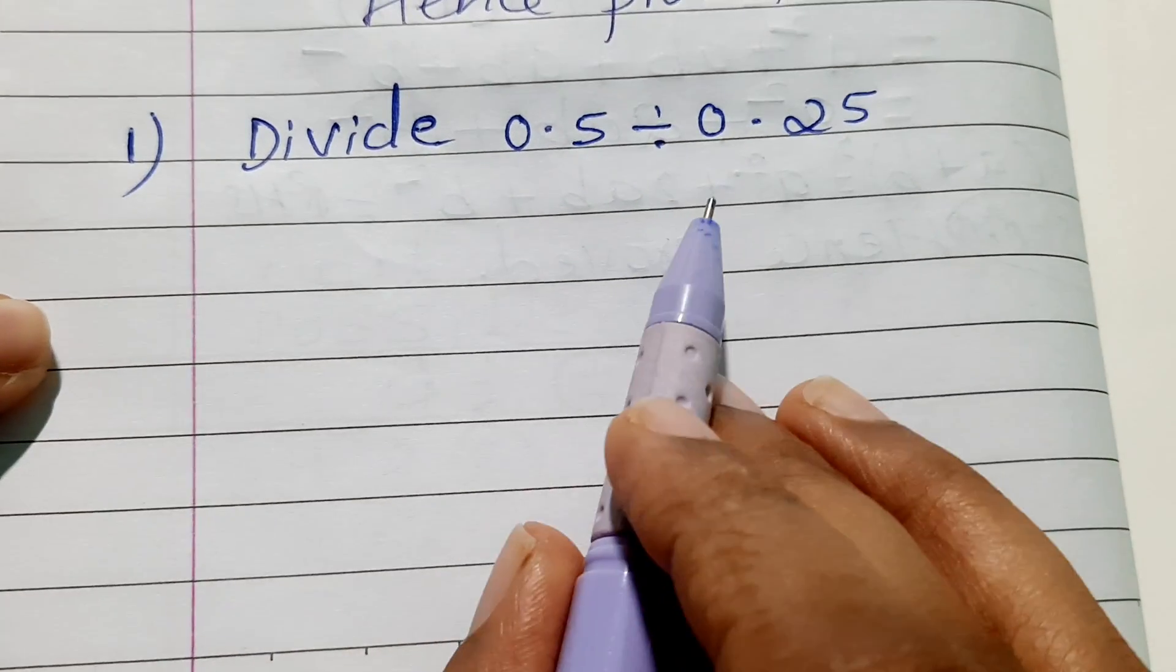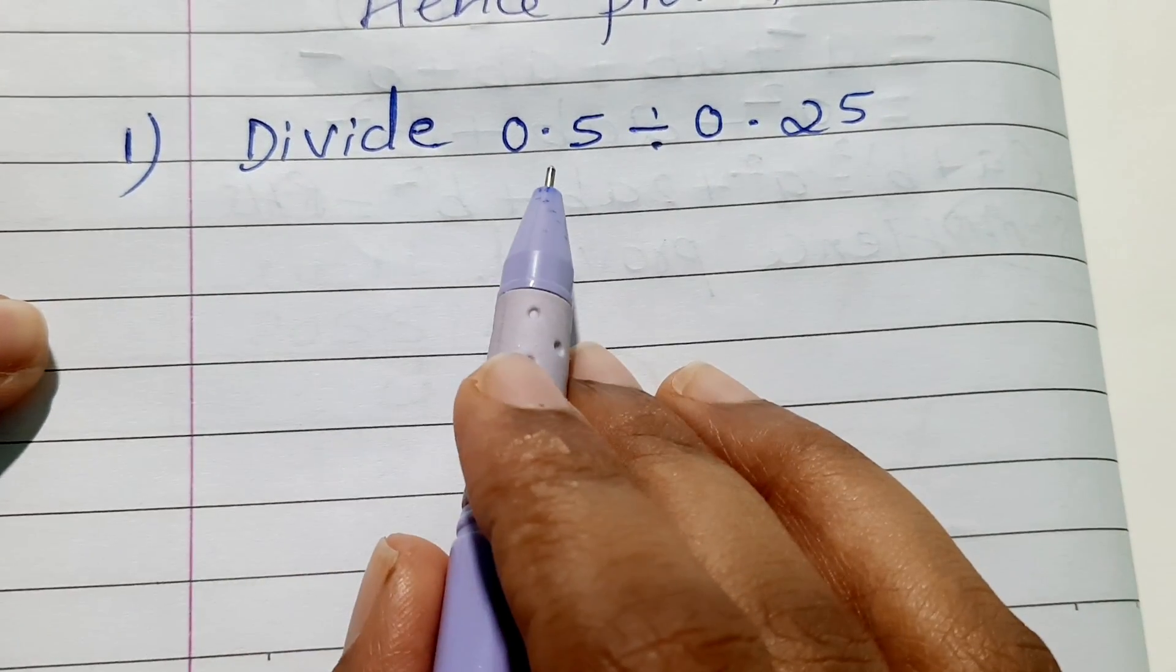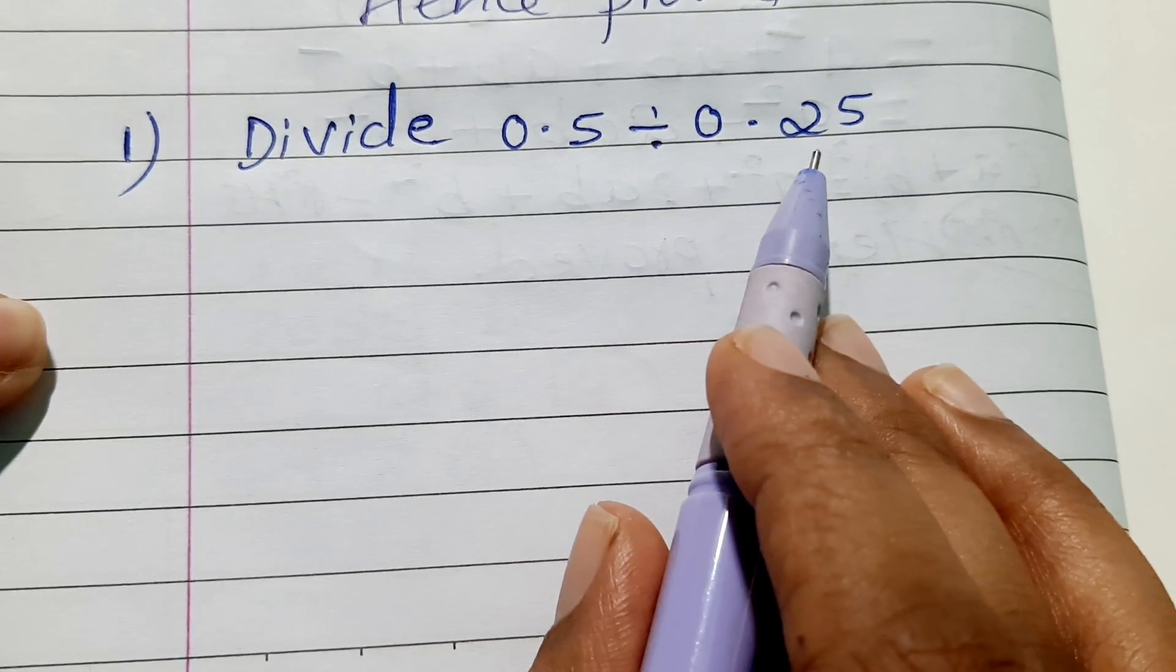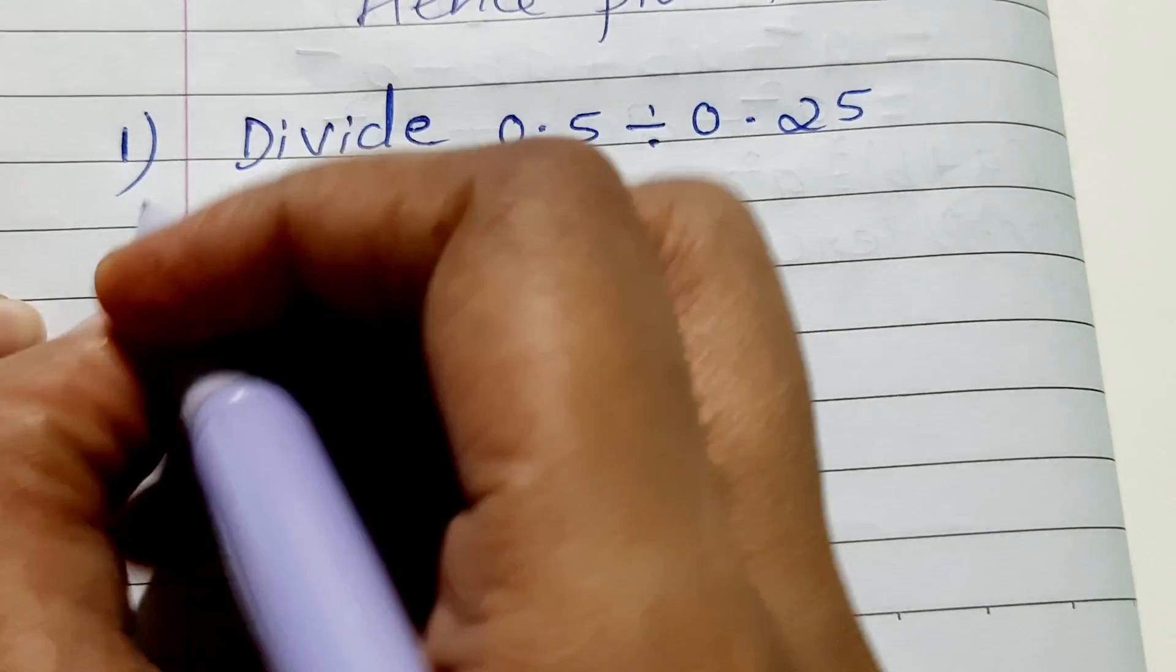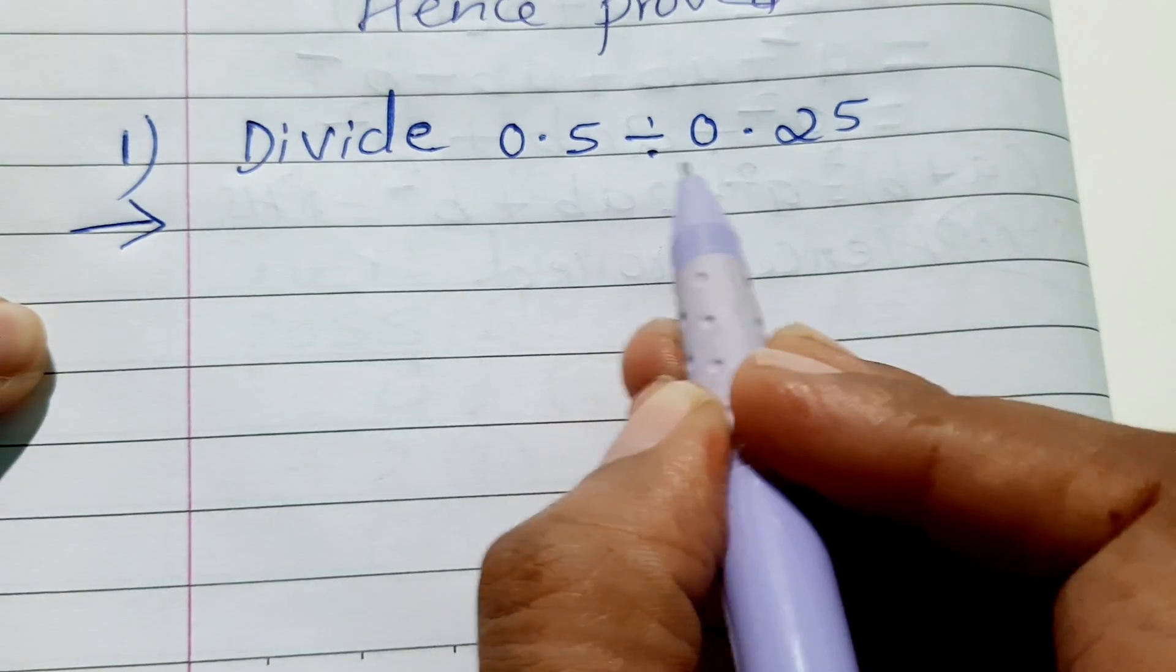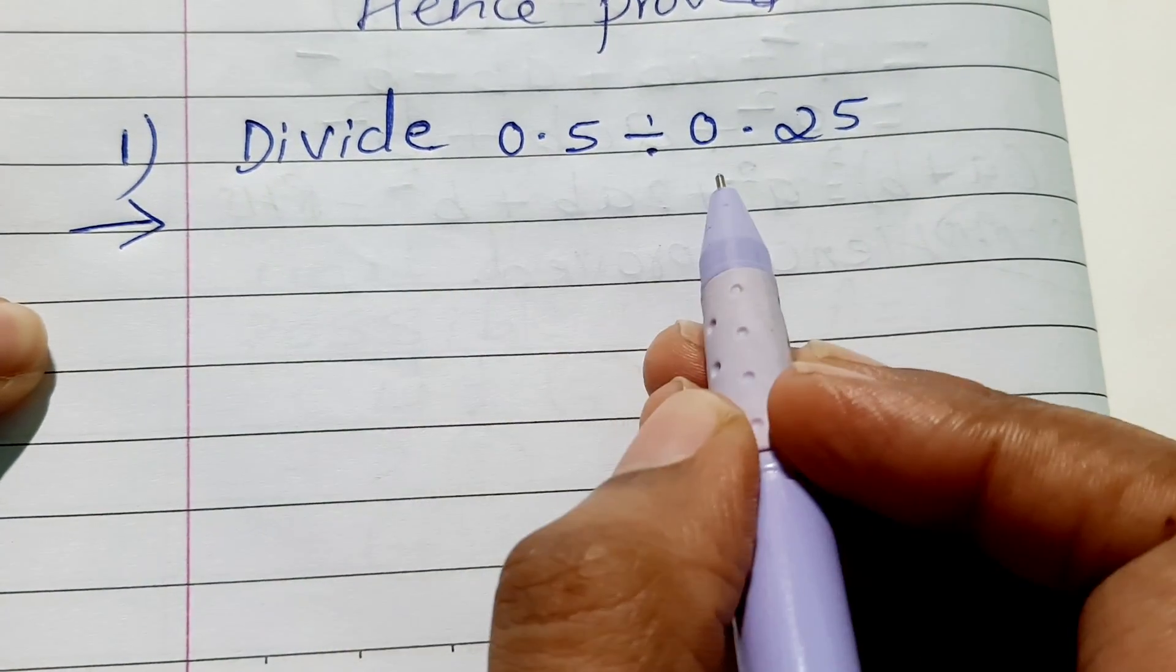Welcome to today's class of mathematics. Today's question is divide 0.5 by 0.25. So let us see how to divide 0.5 by 0.25 and what you'll have to do.